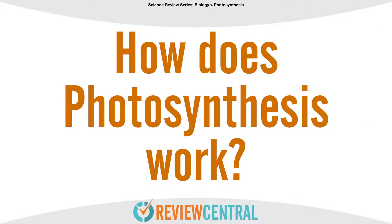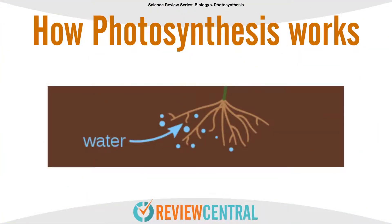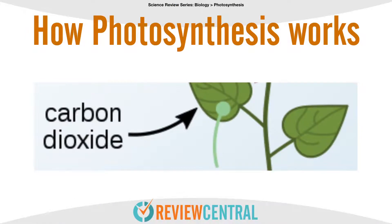But how does photosynthesis work, and where does it take place? In plants, photosynthesis takes place mainly in the leaves, but the entire process actually starts at the roots. First, water is pulled into the plant through the roots. This water passes up the plant stem and into the leaves. Next, plants have to capture carbon dioxide from the air. Carbon dioxide is absorbed into the plant leaves through small openings called stomata.